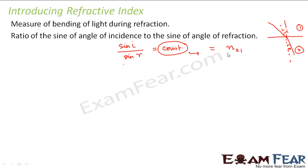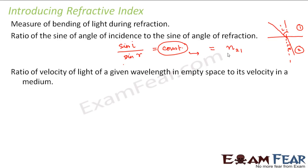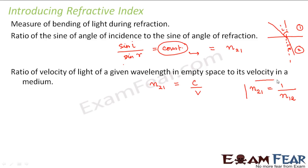Refractive index is also defined as the ratio of the velocity of light of a given wavelength in empty space (c) to the velocity in a medium (v). So we define the refractive index of medium 2 with respect to medium 1 as c divided by v. There is another important relationship: the refractive index of medium 2 with respect to 1 equals 1 divided by the refractive index of medium 1 with respect to 2 — they are reciprocals of each other.